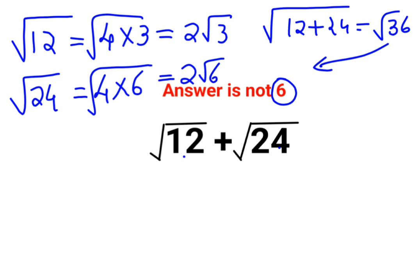So now what happens is you have 2√3 + 2√6. Apart from this, you can't do much. The last step should be √3 + √6.